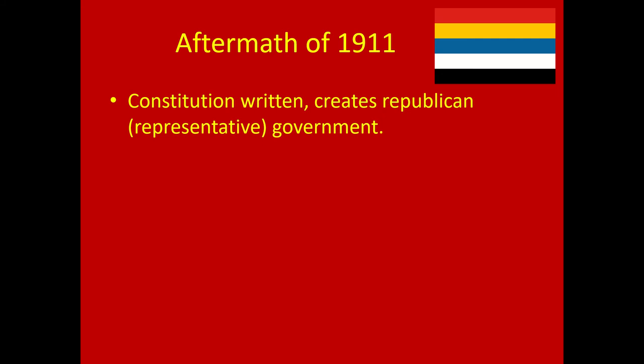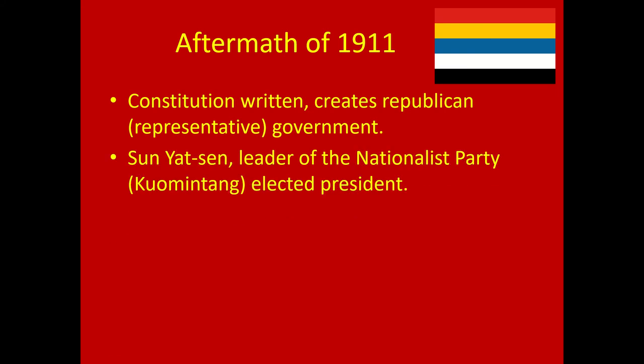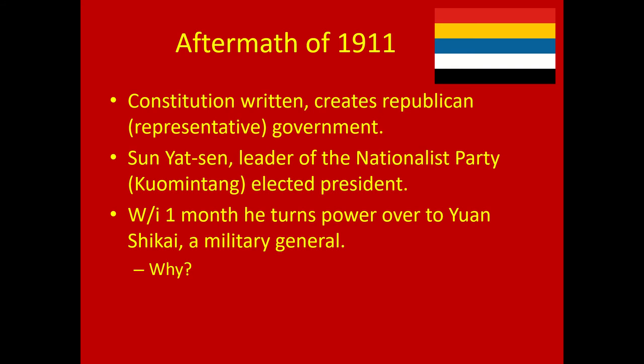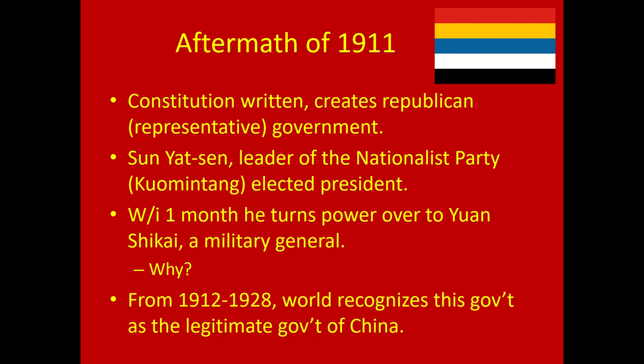After 1911, a constitution is written and a new republican — meaning representative — government is formed. The leader of the nationalist party is Sun Yat-sen, who wants to make China a leader in the world, not a puppet for other countries. He becomes elected president but within a month voluntarily turns over power to military general Yuan Shikai, because a new government needs the backing of the military. From 1912 to 1928, the world recognizes this as the legitimate government of China.